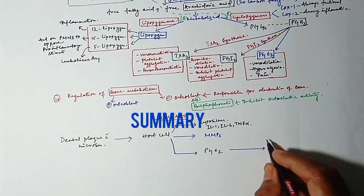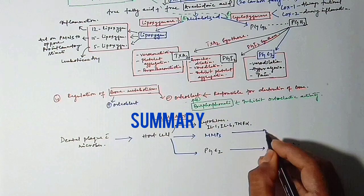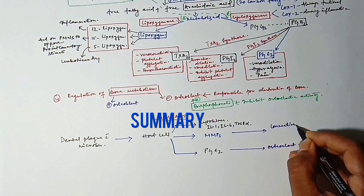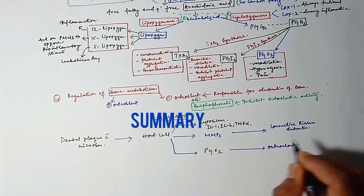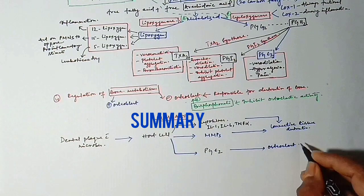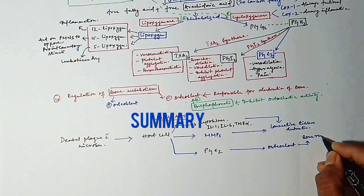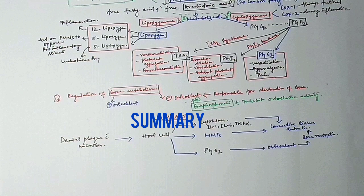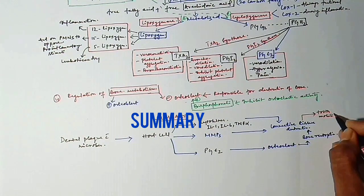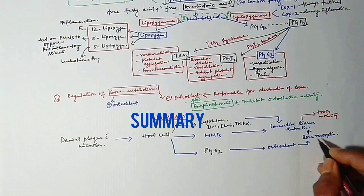The cytokines and MMPs will give rise to connective tissue destruction. Osteoclastic activity will lead to bone resorption. Bone resorption will eventually lead to connective tissue destruction. Connective tissue destruction will lead to tooth mobility, and bone resorption will lead to pocket and attachment loss.